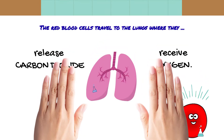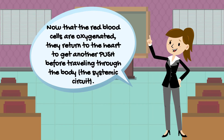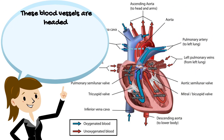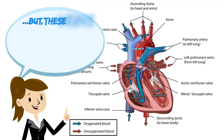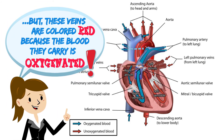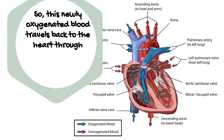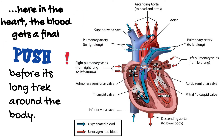Now that the red blood cells are oxygenated, they return to the heart to get another push before traveling through the body in the systemic circuit. These blood vessels are headed toward the heart, so they are veins, but these veins are colored red because the blood they carry is oxygenated. This newly oxygenated blood travels back to the heart through the pulmonary veins. Here in the heart, the blood gets a final push before its long trek around the body.